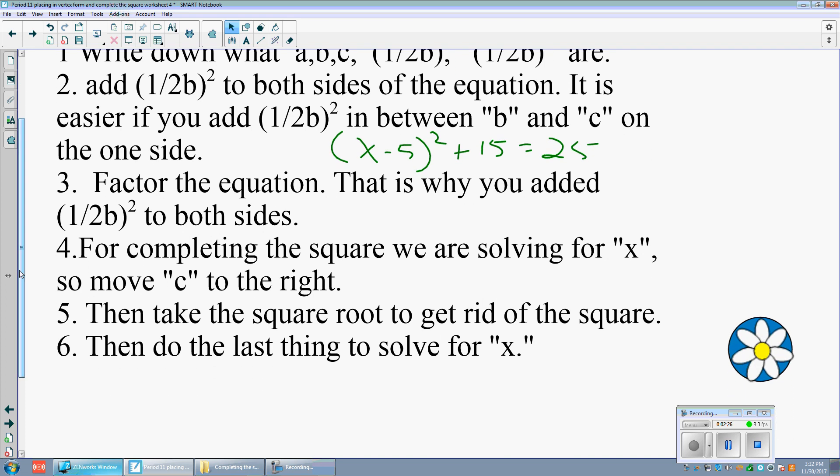For completing the square, this is the big deal. For completing the square, we're solving for x. That means we want to get x by itself. We want to move everything away from x to the other side of the equal sign. So the first thing we do is move c. That's the c number, that's the 15. Subtract it from both sides.